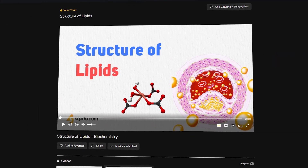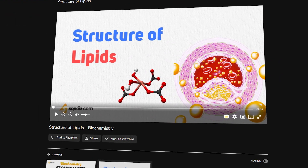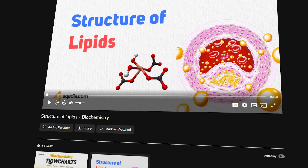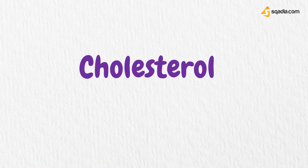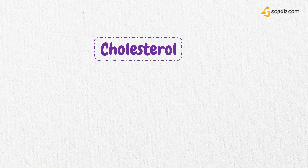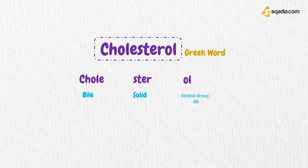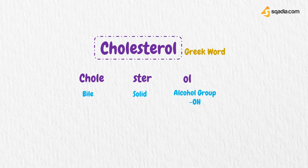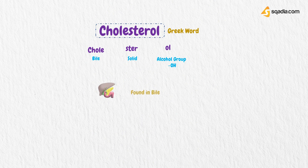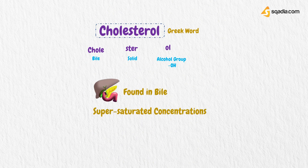We are back with the continuation of our previous topic, lipids. Today we will discuss cholesterol in detail. Cholesterol is a lipid named from the Greek roots: chol means bile, styr means solid, and -ol because it has an alcohol group. It is normally found in bile, but if present at supersaturated concentrations, it crystallizes out to form solid bile — that is, gallstones.